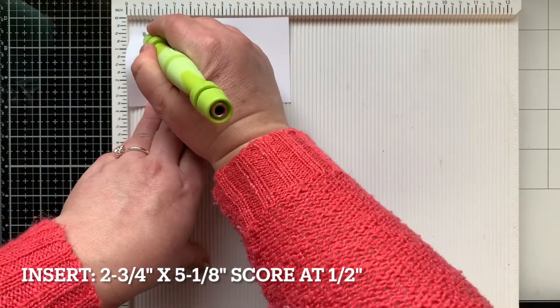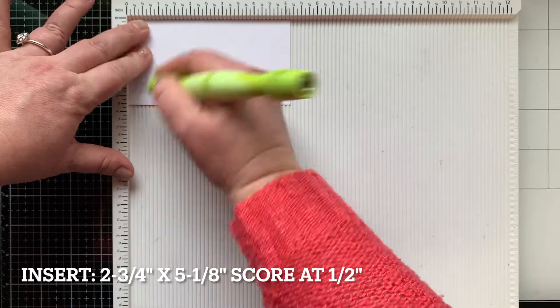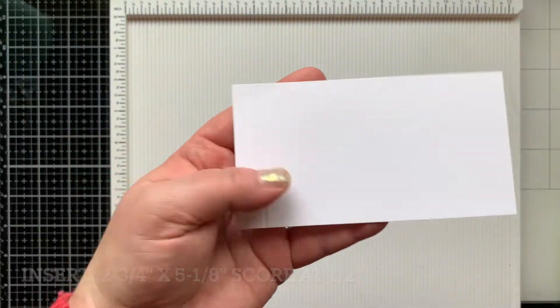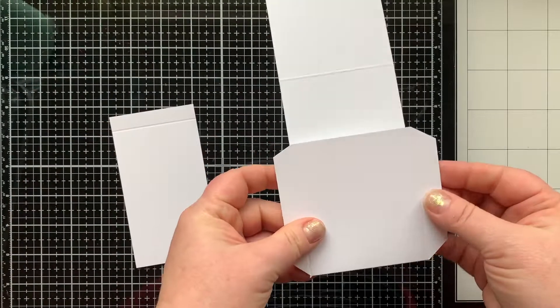Next we need an insert that measures 2 and three fourths by 5 and one eighth. We're going to score the top of it at a half of an inch and that's it, it's ready to go.